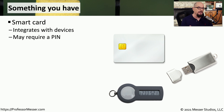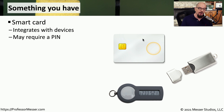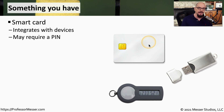Another authentication factor is something you have. This is usually a device or some type of system that is near where you happen to be. Something like a smart card, for example, would be a card that we keep with us. This is sometimes even a card used as identification, and it might integrate into other devices by sliding it into a smart card reader.